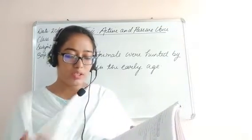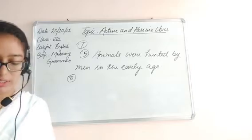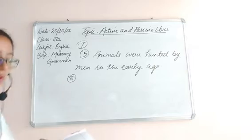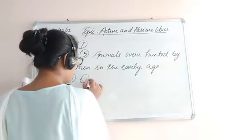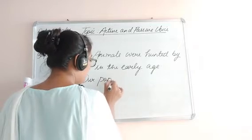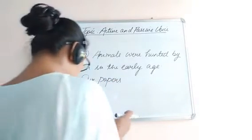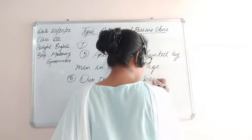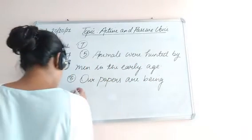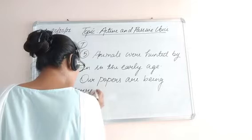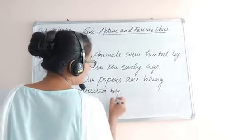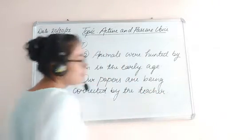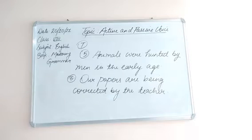The sixth sentence is: 'The teacher is correcting our papers.' The passive voice would become: 'Our papers are being corrected by the teacher.' Please take down the screenshot, students.